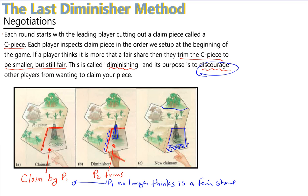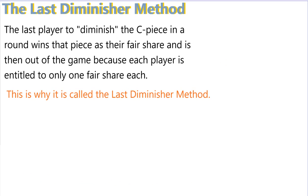That's how the last diminisher method works. To recap: the last player to diminish the C piece in the round is the one who wins that piece as their fair share. Once you get a fair share, you are out of the game, because each player is only entitled to one fair share. This is why the method is called the last diminisher method — the last person to diminish gets to keep it.